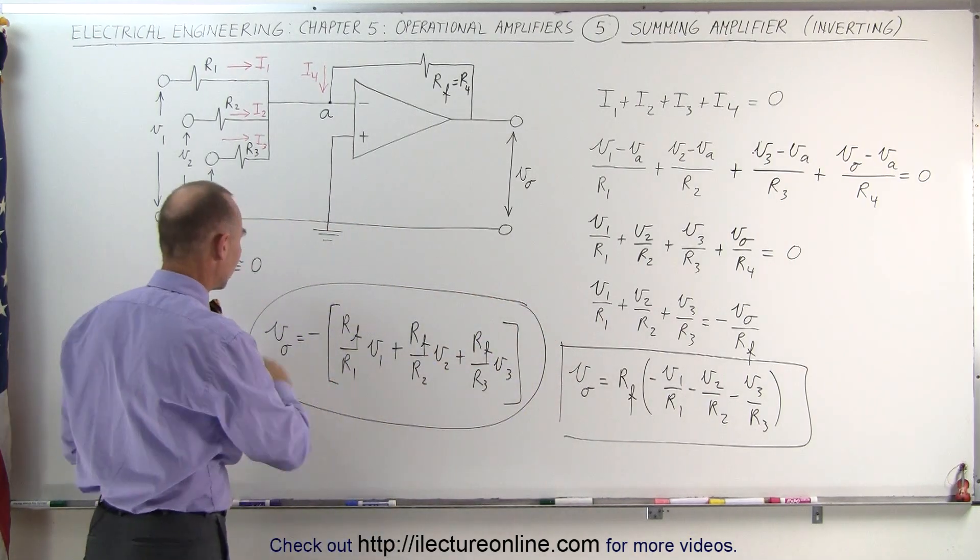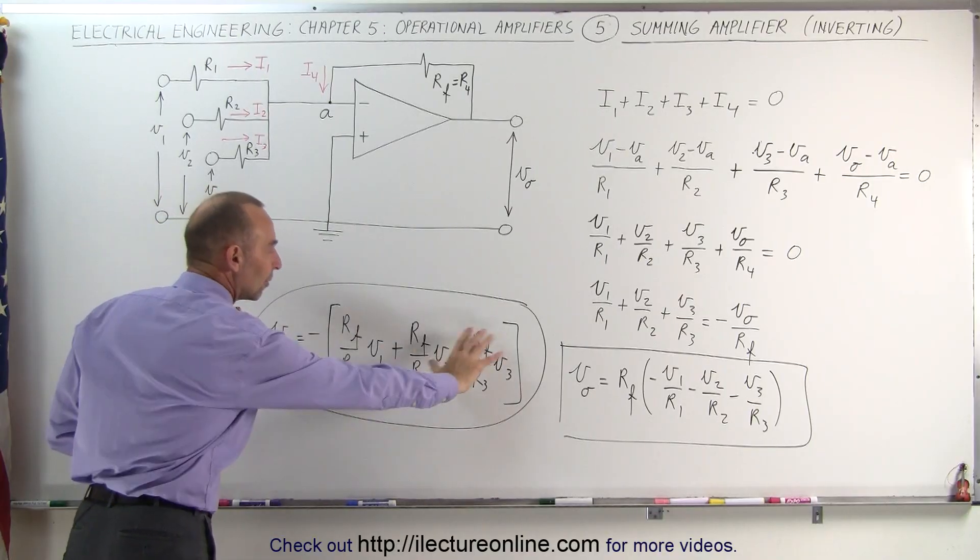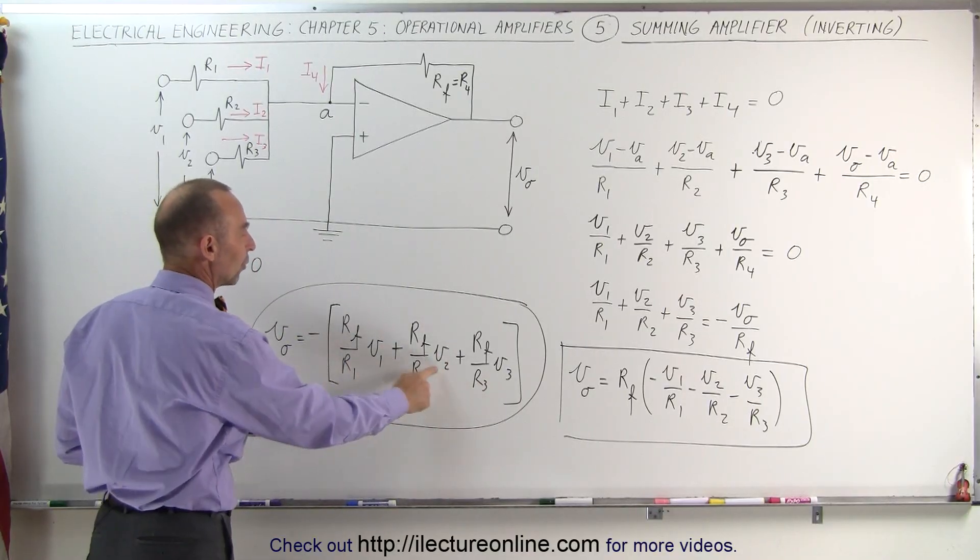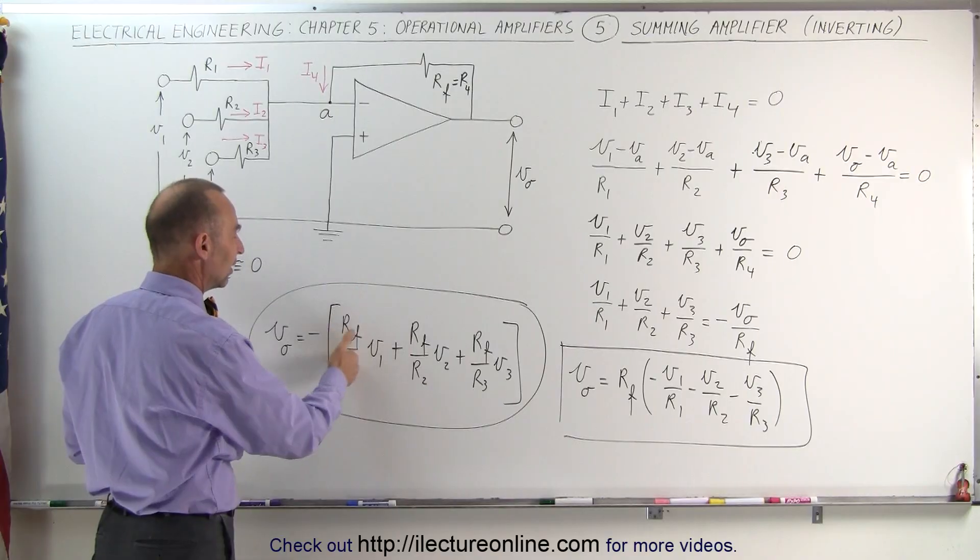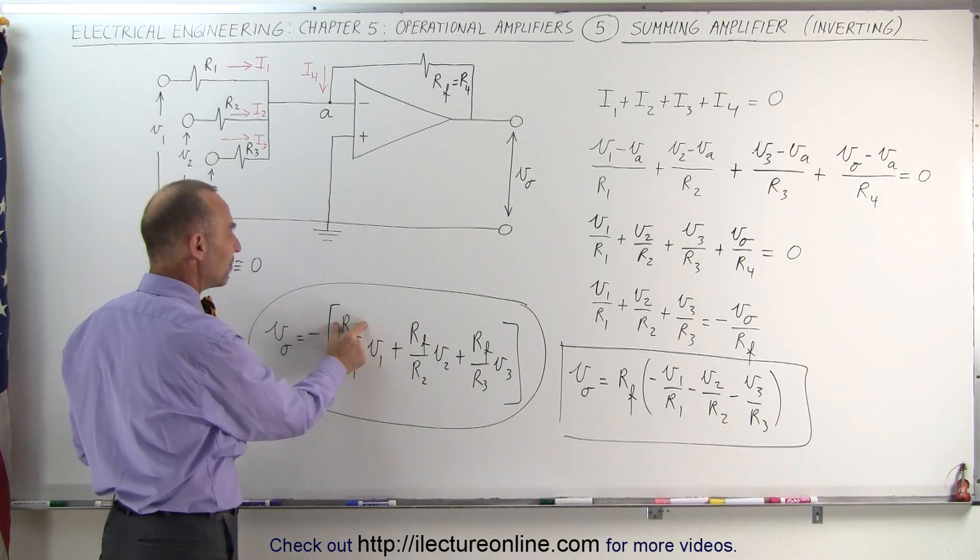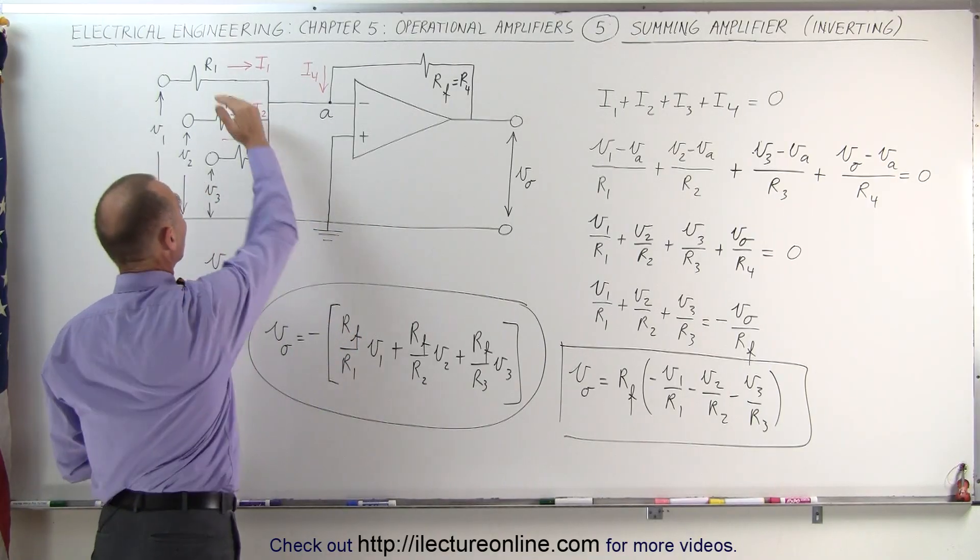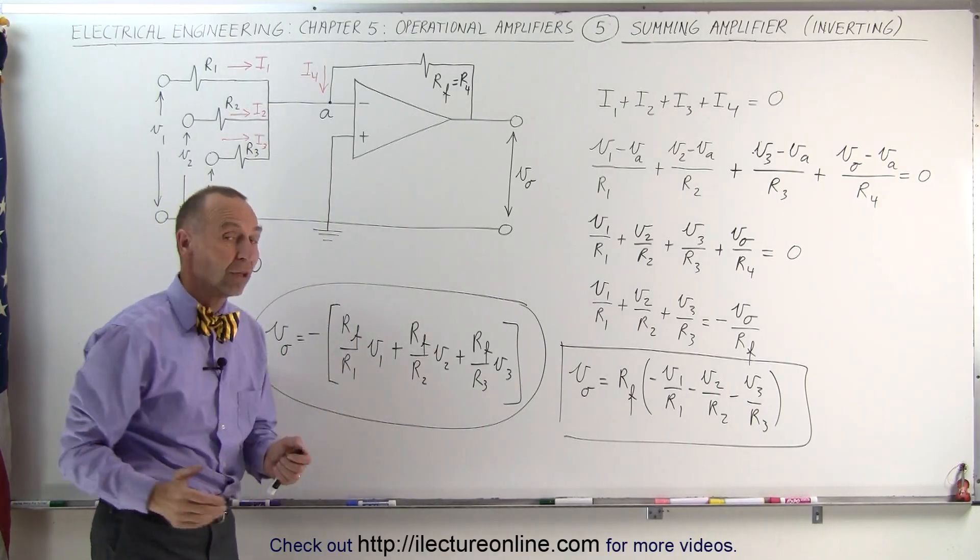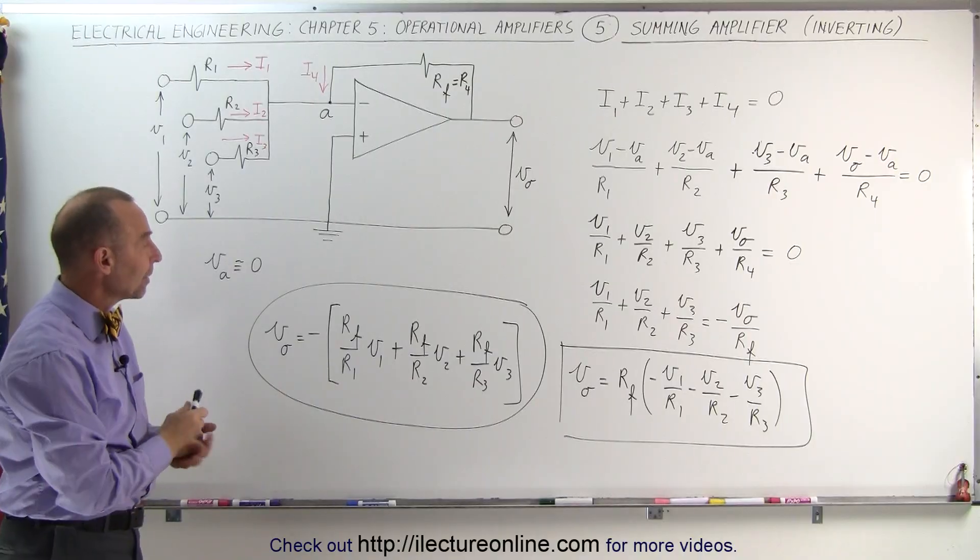Here again you can see that the output voltage will be the negative of the sum of these voltages, assuming that these voltages are positive. And we can see that each voltage is multiplied by the gain factor relative to the feedback resistor divided by the resistance on each of the three branches there. That's how we deal with a summing amplifier.